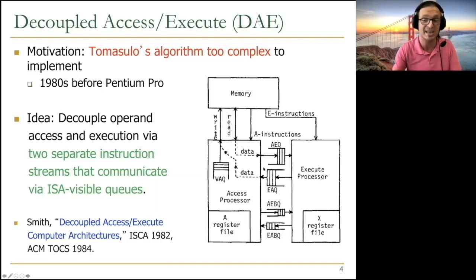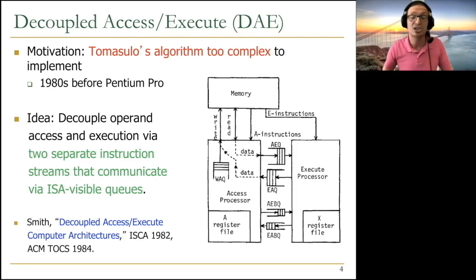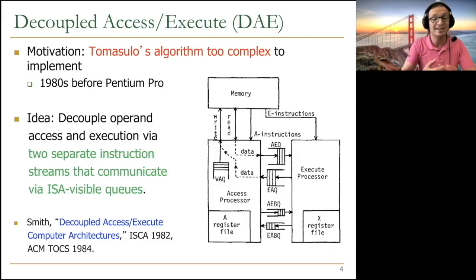First of all, the ISA needs to change. Communication happens through these queues. These are FIFO queues. They are ISA visible, instruction visible queues. The length of the queues determine how much latency you can tolerate on the memory side as well as the execute side. The good part is these queues can be very scalable. They're not like the tag matching logic reservation stations. Reservation stations are hard to scale, load store queues are hard to scale.